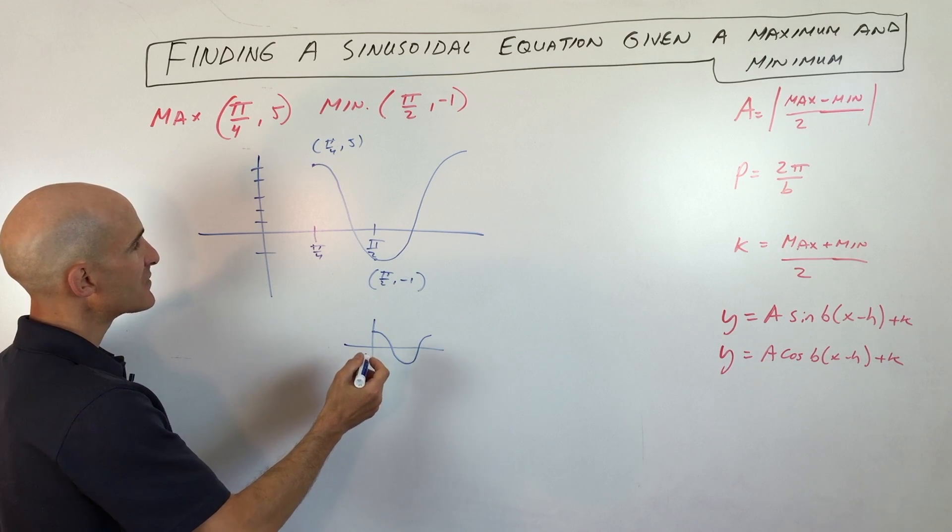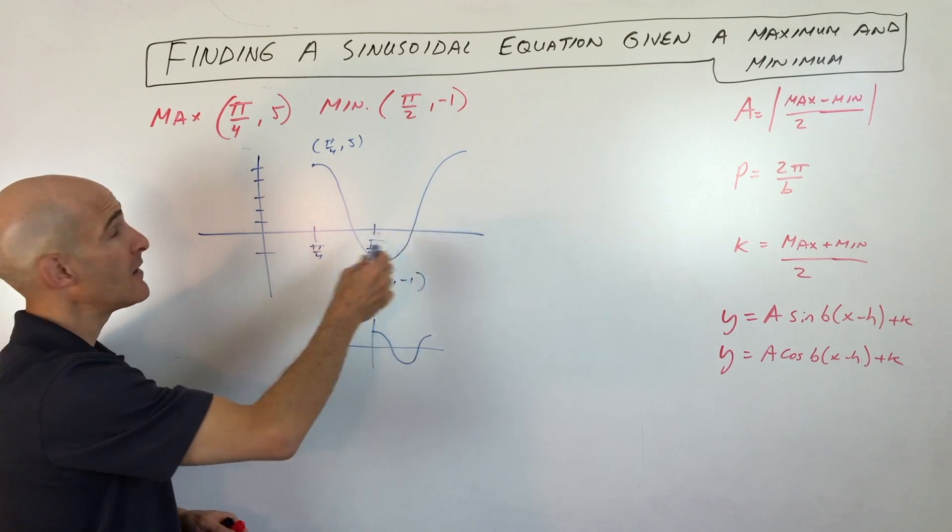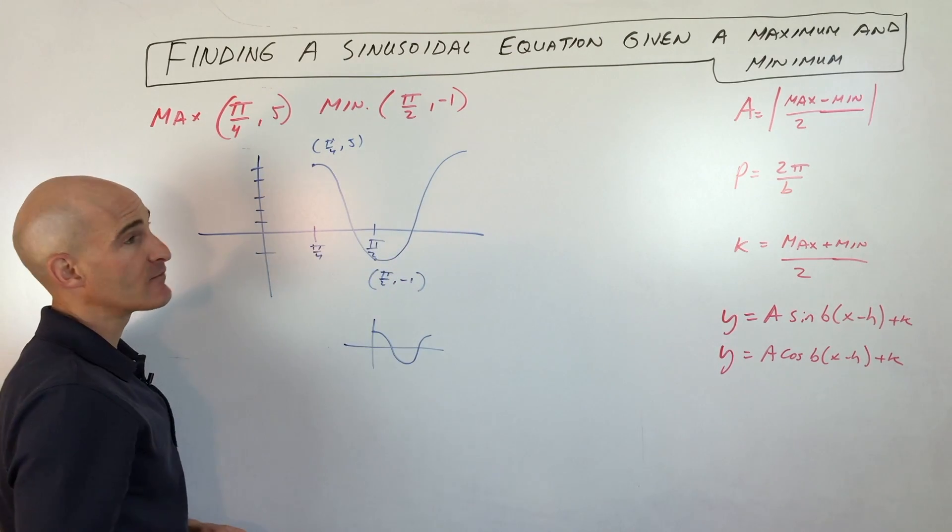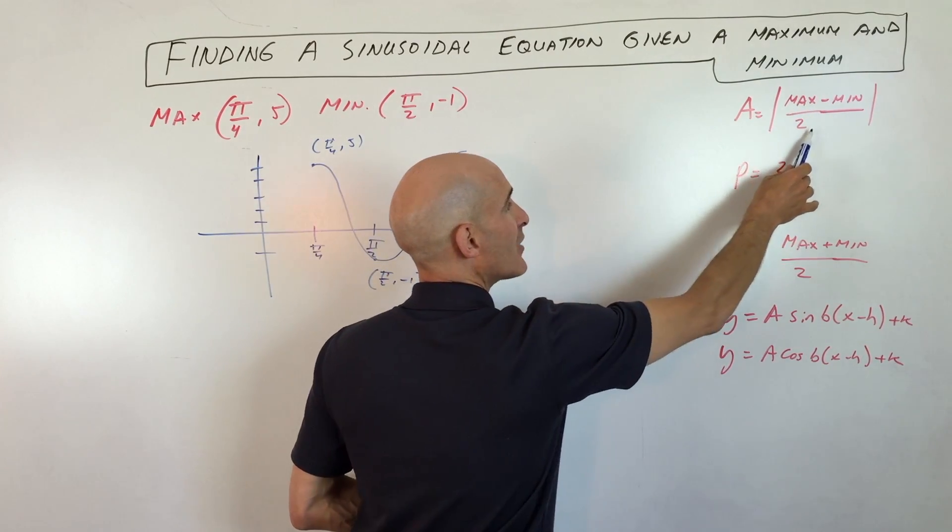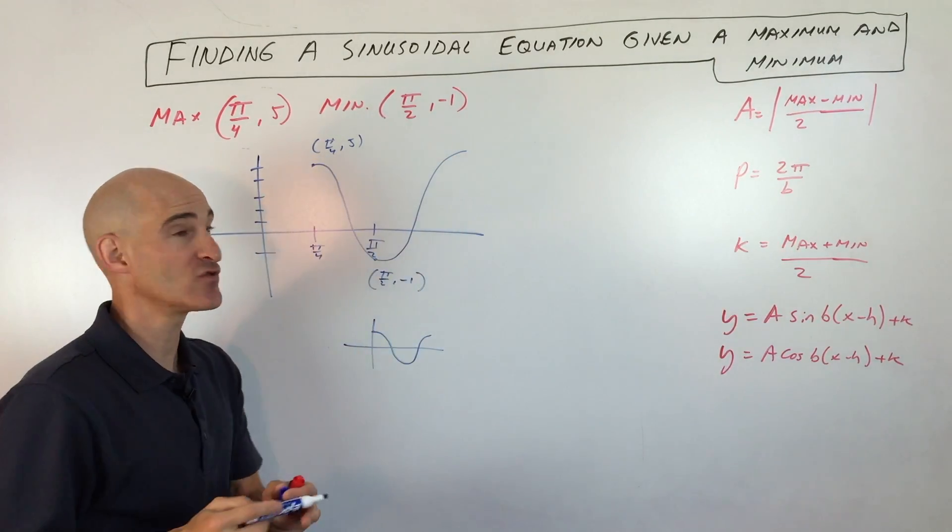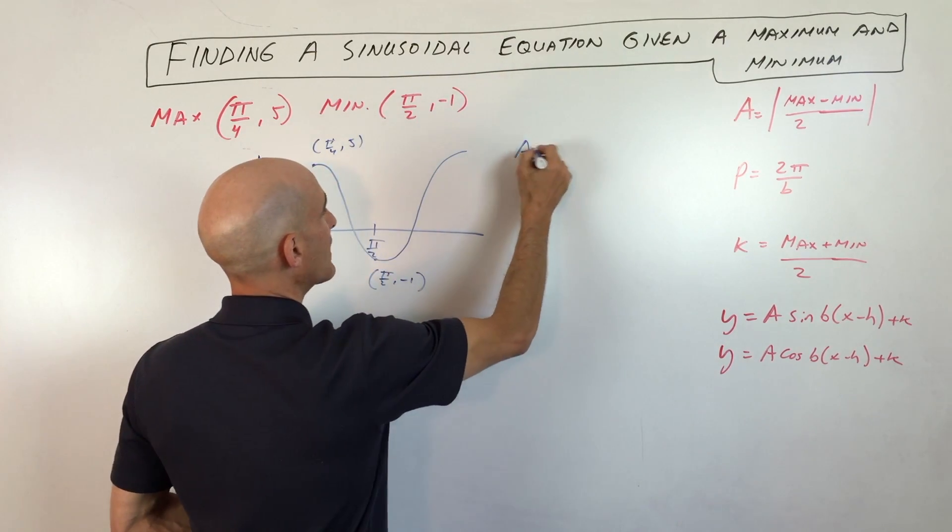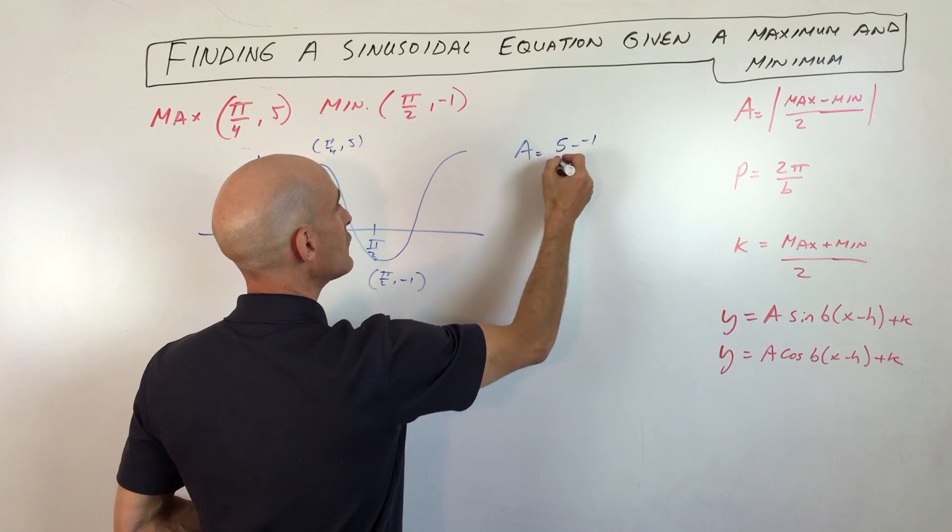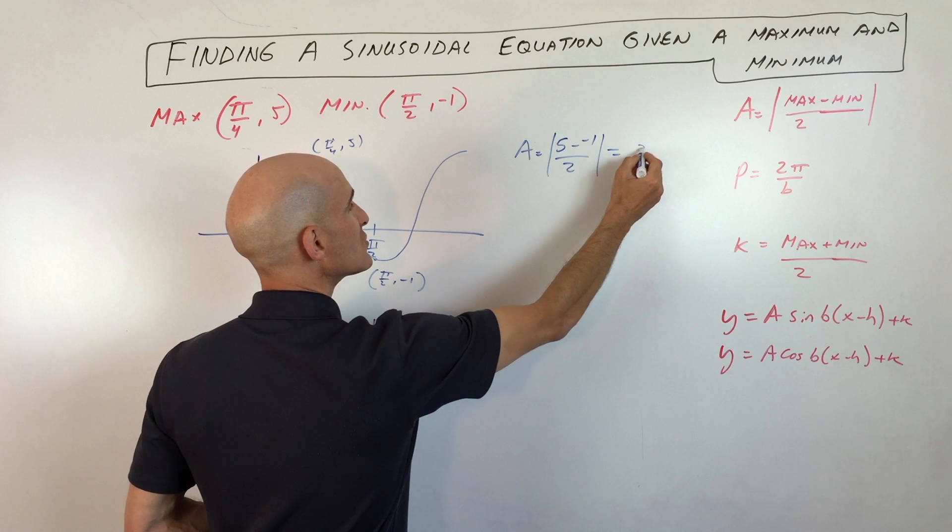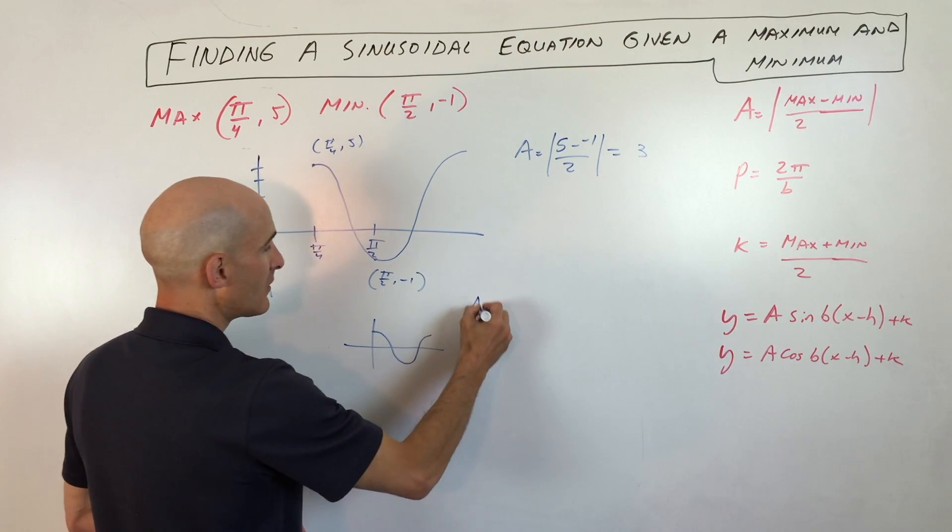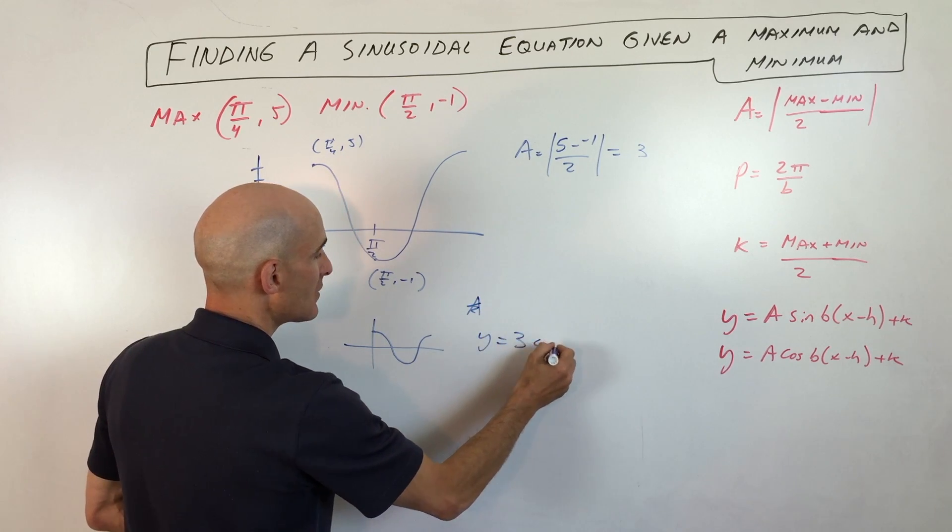So the first thing is to find the amplitude. Now, to find the amplitude, we're trying to find the height of these waves. But you want to measure from the midline. So the way to do that is you take the maximum value minus the minimum value divided by 2, and then you take the absolute value. So we're going to take 5 minus negative 1. So amplitude equals 5 minus negative 1 divided by 2. Take the absolute value. So that's 6 divided by 2, which is 3. And so far we've got y equals 3 cosine.